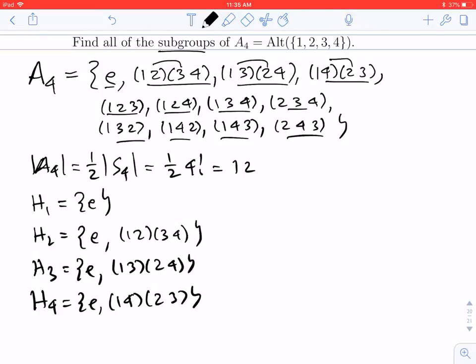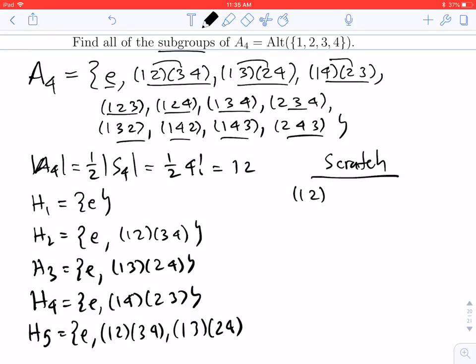What if I try to put two of these double transpositions together? So if I put in (1 2)(3 4) and also (1 3)(2 4). Well, let's do a little scratch work. If I multiply those, because I know I have to be closed under products, let's see what we get.